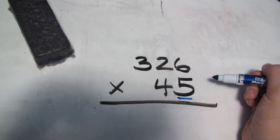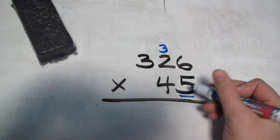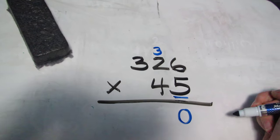6 times 5 is 30. So we're putting 3, 0, like that.